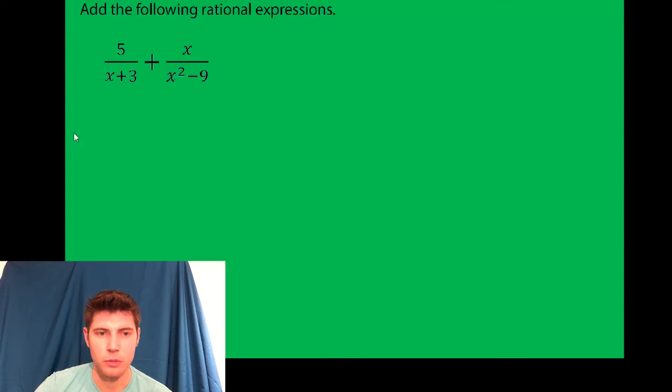So if we factor this x squared minus 9, x minus 3 and x plus 3, which happens to be the least common denominator because x plus 3 is also under this term.